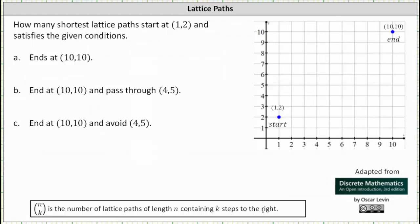Let's begin by determining the length of the shortest lattice paths from (1,2) to (10,10). To do this we simply move from (1,2) to (10,10), only moving right and only moving up. We can do this by taking any path — for example, one way is to go right 9 units and up 8 units. Because we took 9 steps to the right and 8 steps up, 9 plus 8 is 17.